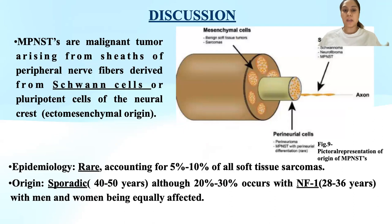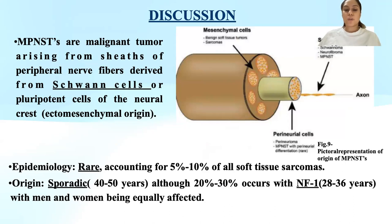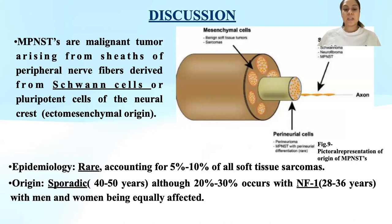Let's have a brief discussion on MPNSTs. MPNSTs are malignant tumors arising from the sheaths of peripheral nerve fibers derived from Schwann cells. These are rare, accounting for only five to ten percent of all soft tissue sarcomas.